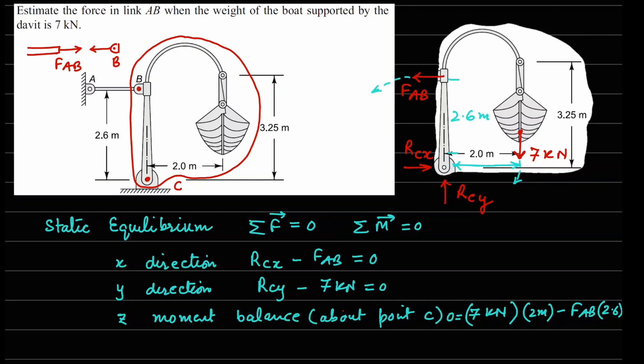So now if I solve this equation, I can directly get the value of FAB from here, which is 14 divided by 2.6, and the answer for this is 5.38 kilonewtons. So in this case, without even looking at the force balance equations, from the moment equation directly we can get to the value of FAB.